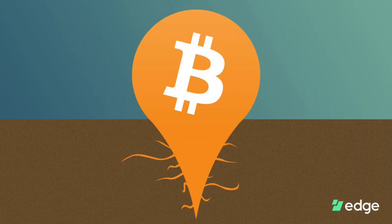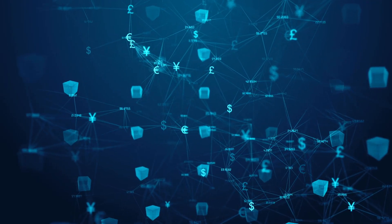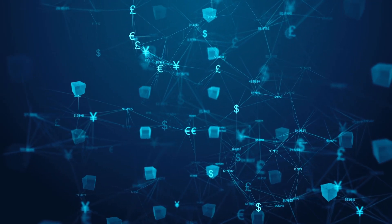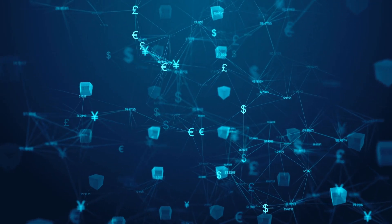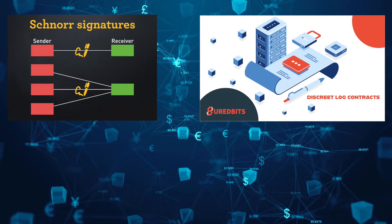In the cryptocurrency space, we hear about all of these fancy innovations being built on top of Ethereum, and Bitcoin sort of takes a backseat from an innovation perspective. However, in late 2021, when Bitcoin upgraded to Taproot, it very quietly got the ability to run more complicated smart contracts using a feature called Schnorr signatures and discrete log contracts.